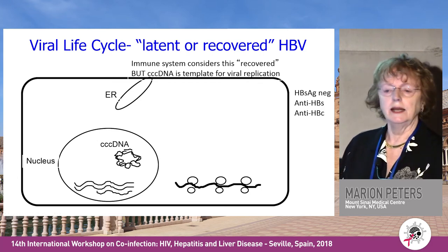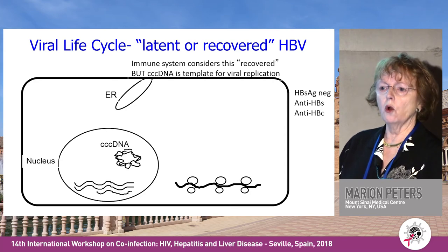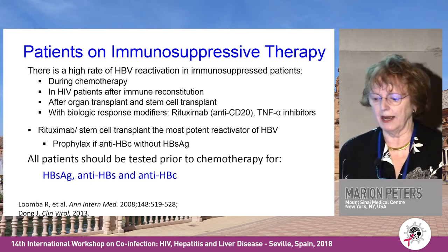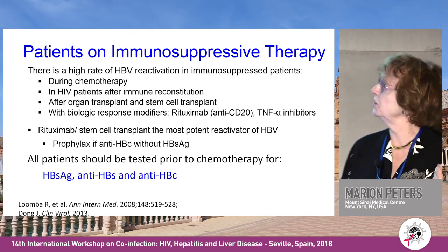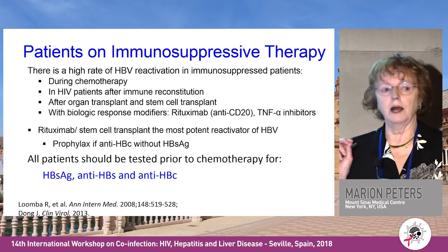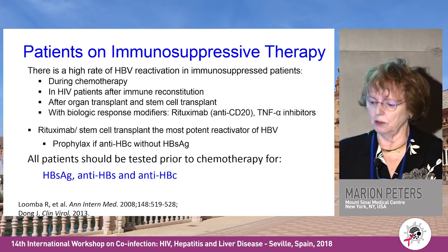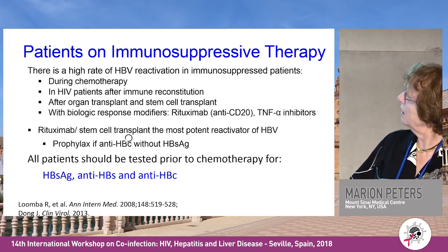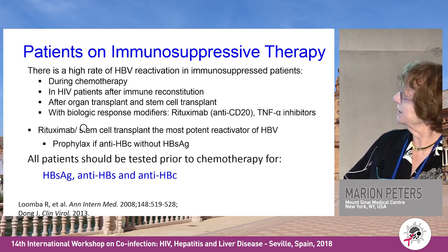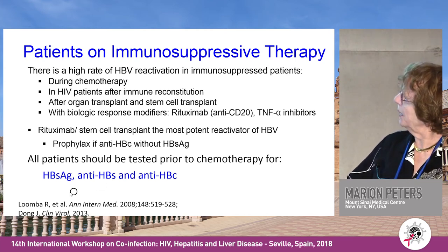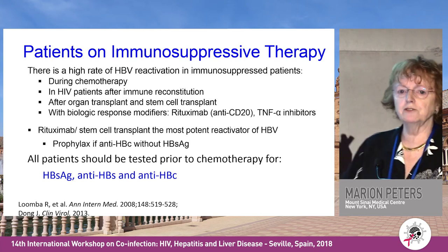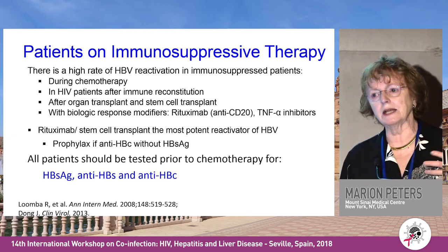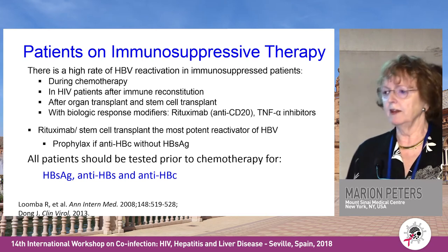Reactivation is most efficiently triggered by transplantation or rituximab. Patients on immunosuppressive therapy have a high rate of reactivation during chemotherapy, in HIV patients, organ transplantation, or with biologic response modifiers. Rituximab is the most efficient; TNF is also a risk but less so. All patients who have anti-core alone should be prophylaxed, and all patients prior to chemotherapy need all three markers tested. If they have surface antigen, they must be on treatment; if they have antibody to core and are going on rituximab or other biologics, they should be on treatment or monitored closely.